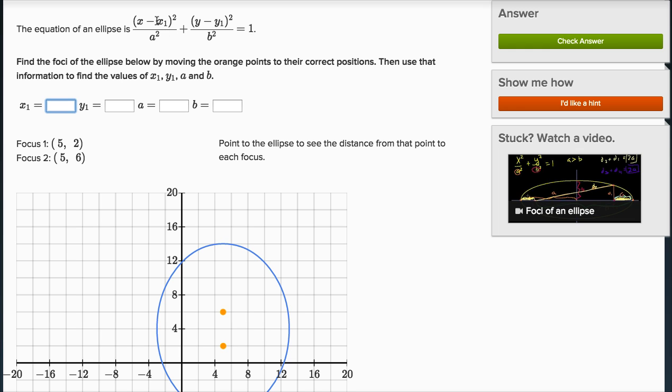This would be an ellipse that is centered at x equals x1, y equals y1. The major radius would be a, the minor radius would be b.